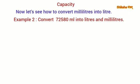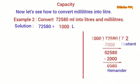Let's see one more example: convert 72,580 milliliters into liters and milliliters. We divide 72,580 by 1,000. On dividing, we get 72 as the quotient and 580 as the remainder. So 72,580 milliliters is equal to 72 liters and 580 milliliters.